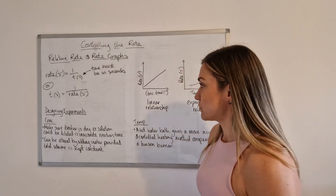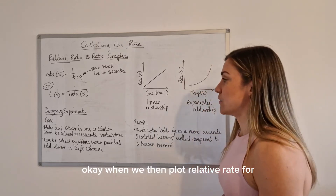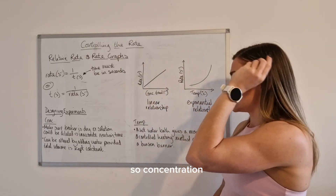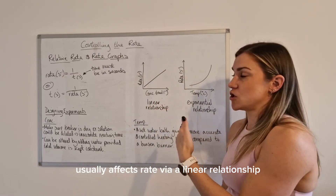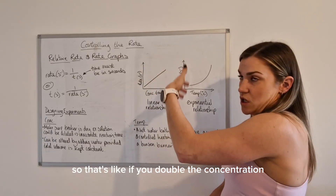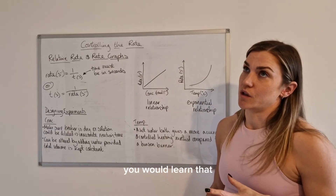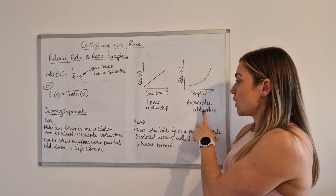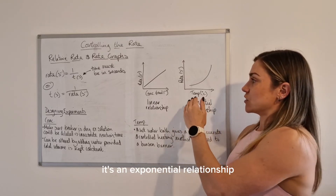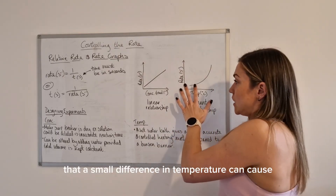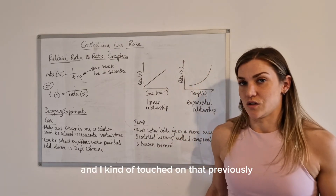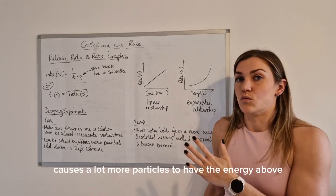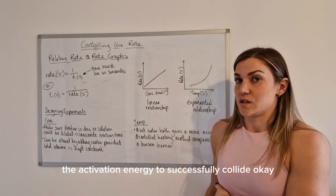When we plot relative rate for the effect of concentration and temperature, we get two different relationships. Concentration usually affects rate via a linear relationship — so if you double the concentration you would usually double the rate, though at a higher level there are some exceptions. When it comes to temperature affecting rate, it's an exponential relationship: a steep curve where a small difference in temperature can cause a large increase in rate. This links back to the kinetic energy distribution diagrams — a shift in temperature causes many more particles to have energy above the activation energy.